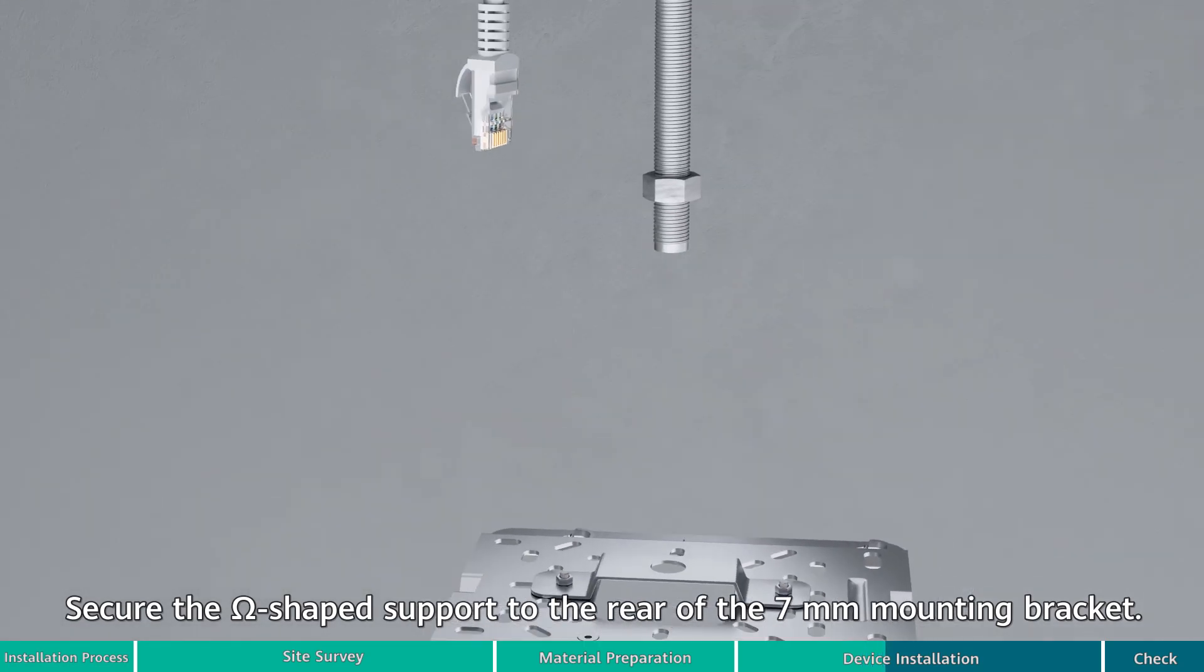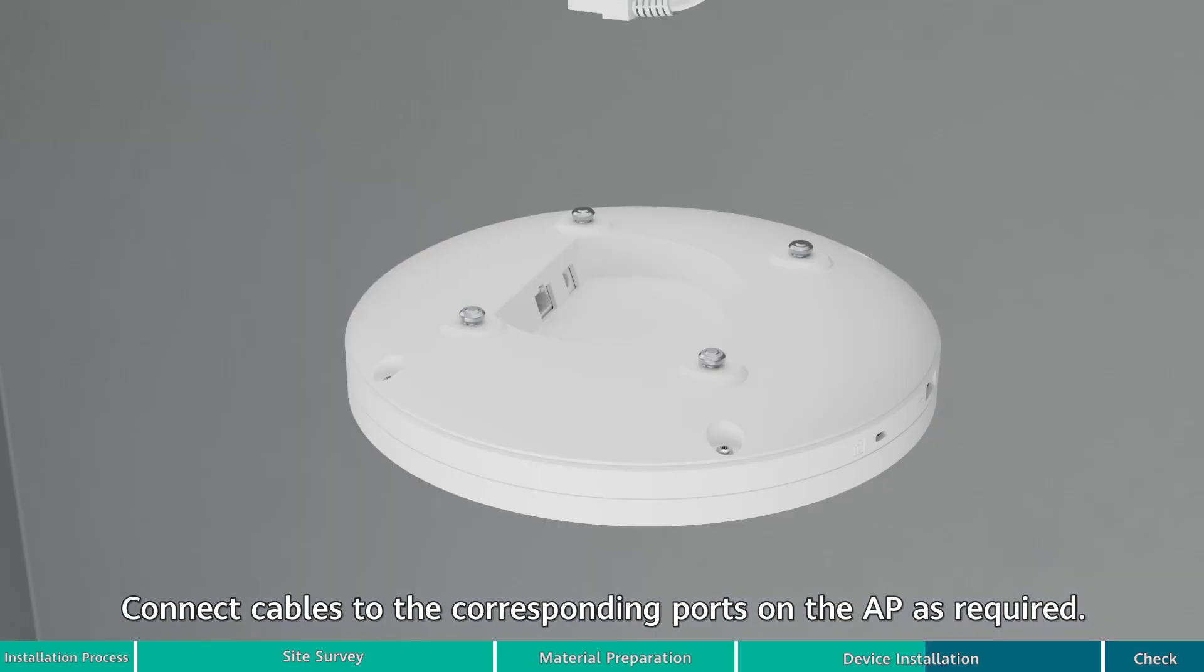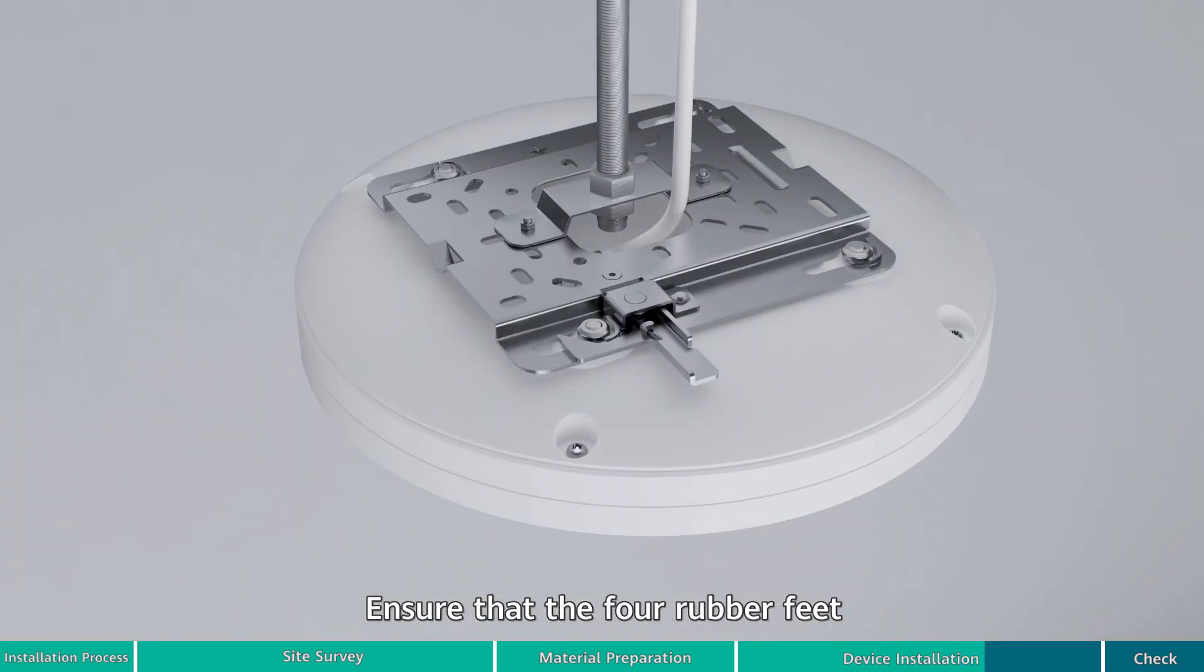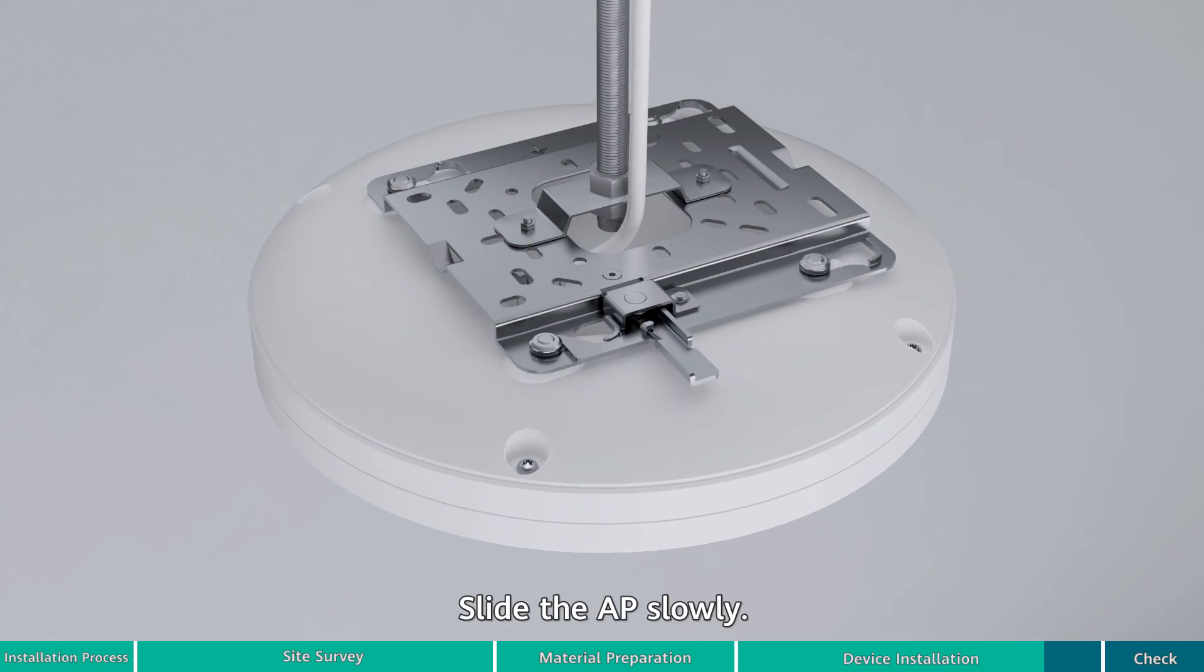Connect cables to the corresponding ports on the AP as required. Clamp the AP on the mounting bracket, ensuring that the four rubber feet on the rear of the AP fit into the mounting holes. Slide the AP slowly until you hear a click sound from the release lever.